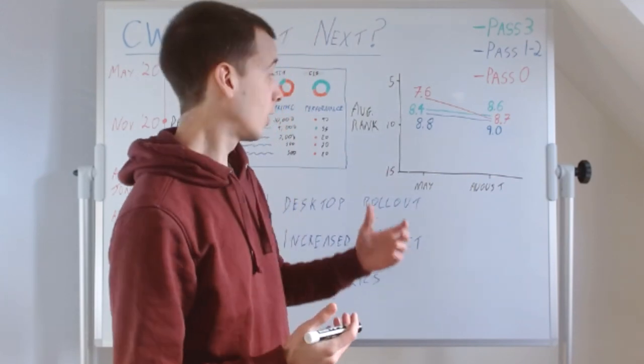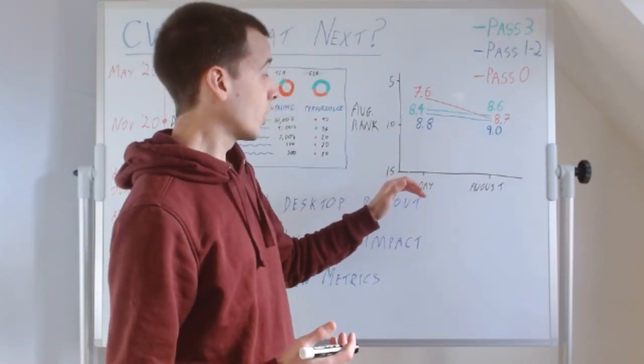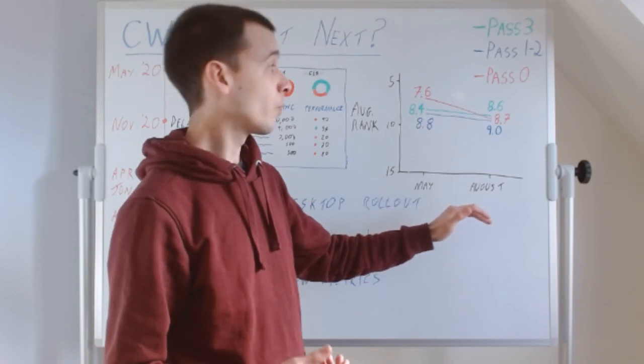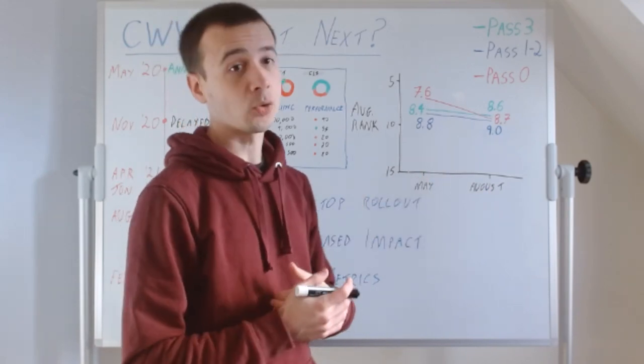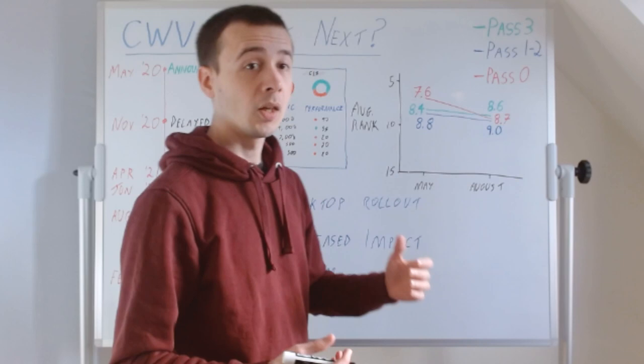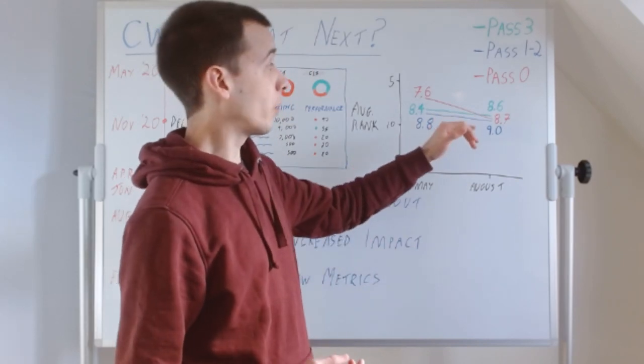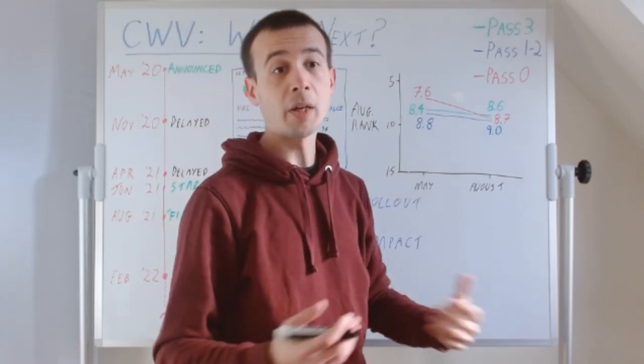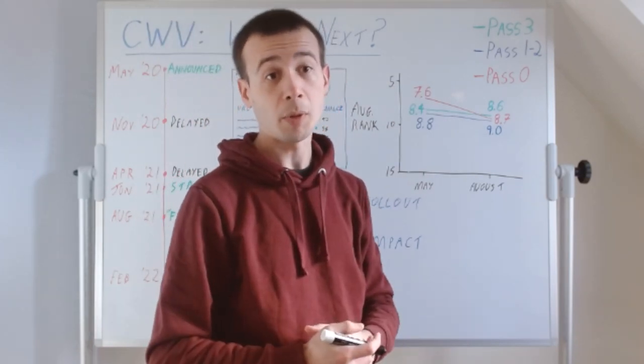So we tracked this with MozCast data. So between the start and the end of when Google said they were rolling it out, we looked at the pages ranking top 20 in MozCast that had passes for 0, 1, 2, 3 of the metrics against the thresholds that Google had published.